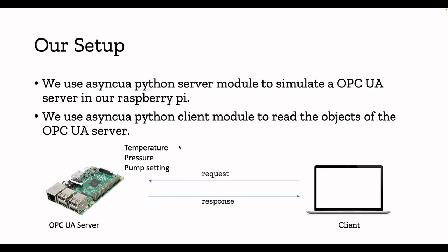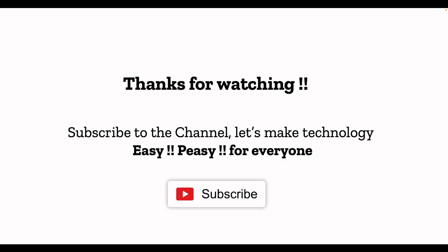From a technical perspective, we just need to understand how the OPC UA server and client are functioning. In the next video, we are going to see hands-on: we are going to run an OPC UA server in a Raspberry Pi with two data points — temperature and pressure. From the client, whether it's a Mac or Windows PC, we will run a client program to get the data from the OPC UA server. We are going to use a Python module called AsyncUA — an open source Python module — to simulate the OPC UA server on the Raspberry Pi and to read data using the AsyncUA Python client. Thanks for watching, please subscribe to the channel, and I'll see you in my next video.